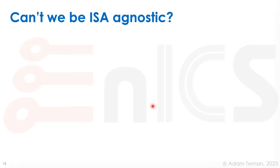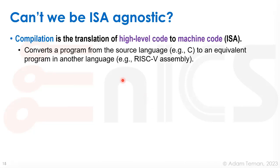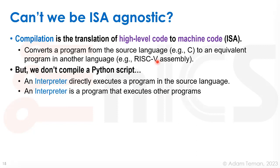Can we be ISA-agnostic? Compilation is the translation of high-level code — like C, C++, Java — to machine code, turning it into the actual instruction set architecture. It converts a program from the source language to an equivalent program in another language. For example, compiling from C to RISC-V gives RISC-V assembly at the output. However, many of you have used Python, and we don't compile Python — we just run it inside a Python shell because it's an interpreted language. An interpreter directly executes a program in the source language.